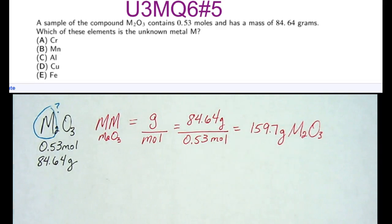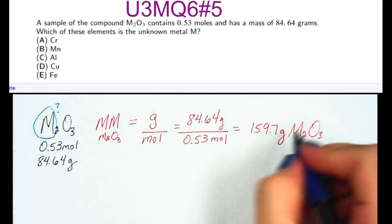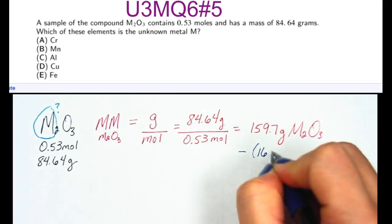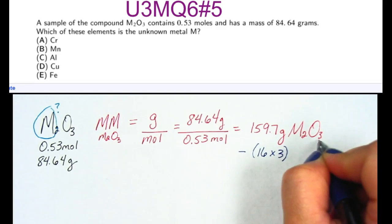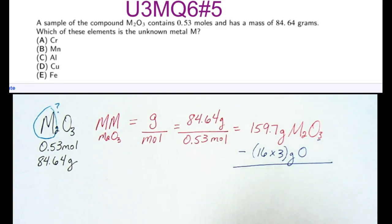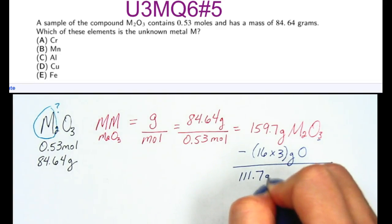Now subtract out the mass of the oxygen. This minus oxygen times 3, since there are 3 of them in the compound, gives 111.7 grams.